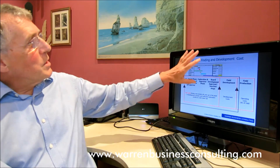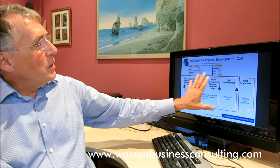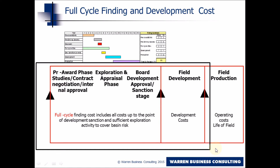Instead of looking at the timing chart here, these are the kind of activities that we're trying to capture in the calculation of full cycle costs. Within the exploration phase and appraisal phase, there has to be enough cost and activity to take into account the possibility of dry holes, of finding the field, of appraising it to a level of certainty that makes it appropriate for you to take the development decision.